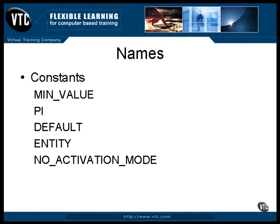The only other naming convention that's used anywhere near consistently is for constants. They are usually named with all uppercase letters, and they also have a tendency to include the underscore character.